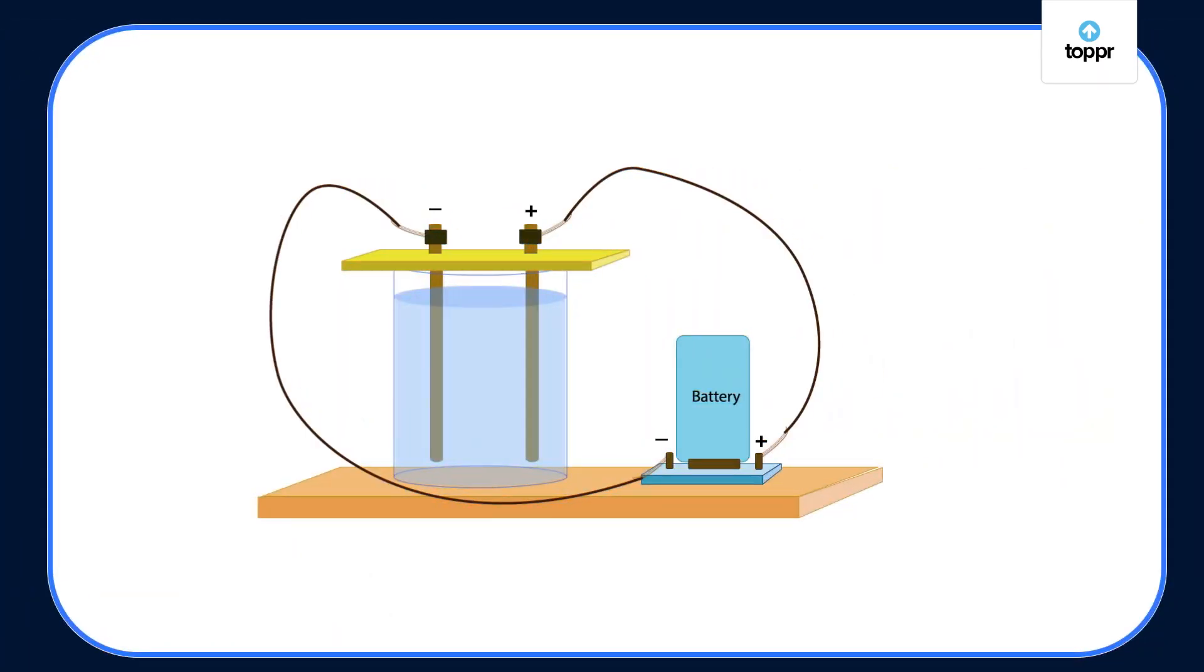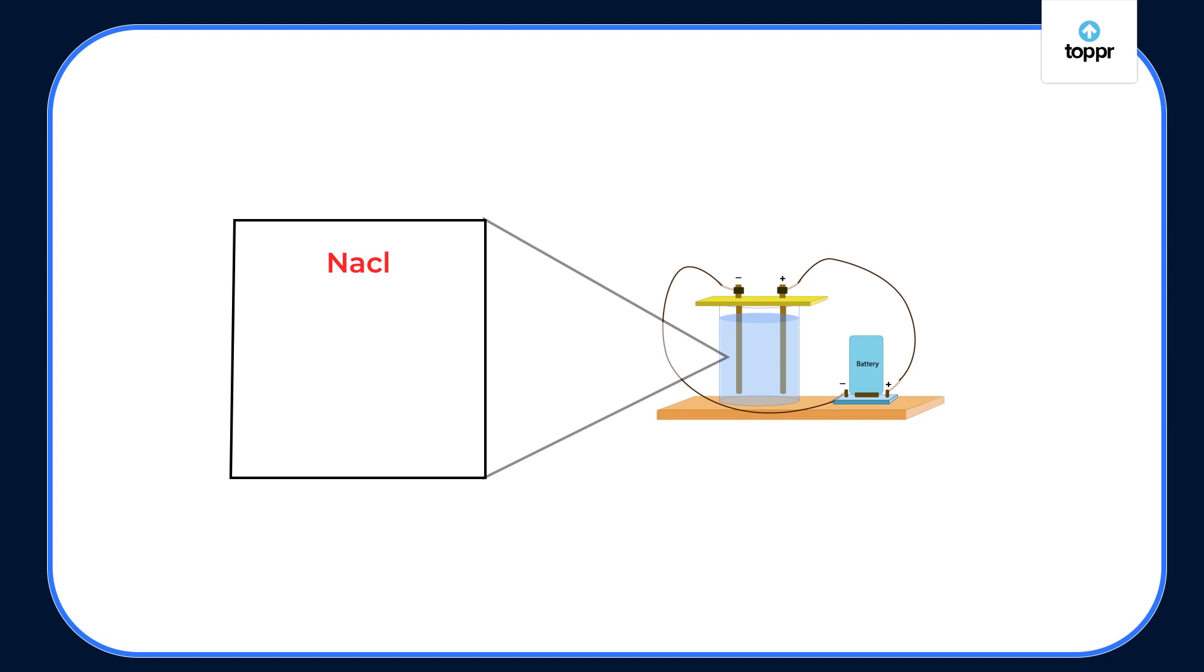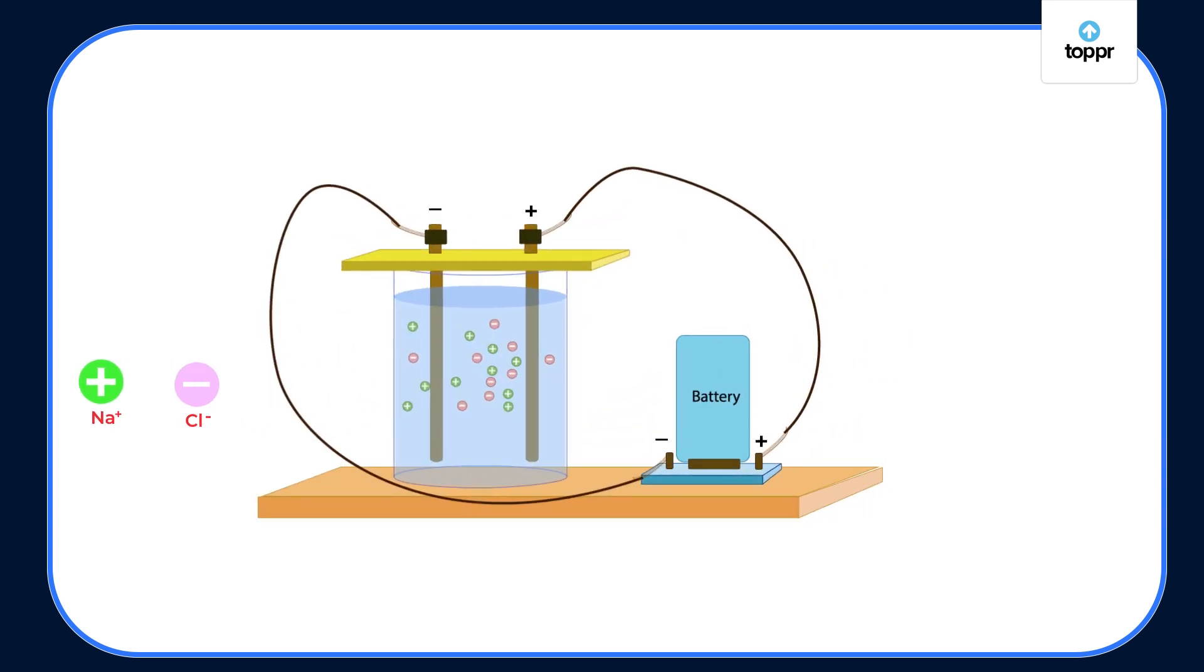Now, let's see what actually happens. When electricity is passed through the salt solution, the salt particles or NaCl present in the solution breaks into positive Na+ and negative Cl- because of electricity. And this Cl- flows towards the carbon rod which is connected to the positive end of the battery. This rod is also called the anode.